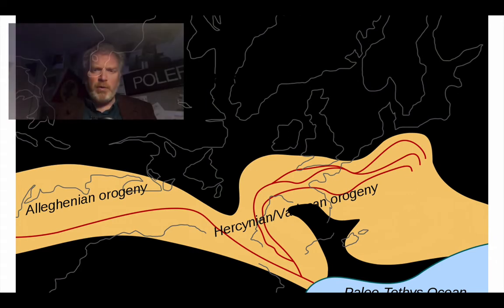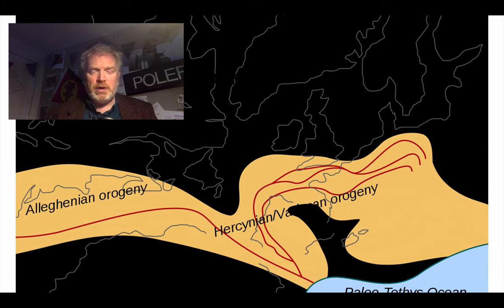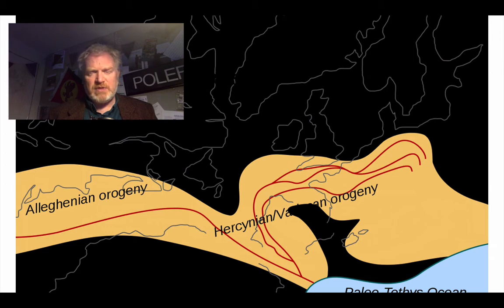If we think about where Britain was at the end of the Carboniferous, we had just crossed the equator, so our climate was equatorial, which did lead to the coal swamps that give the sedimentary environmental conditions needed for the formation of coal.